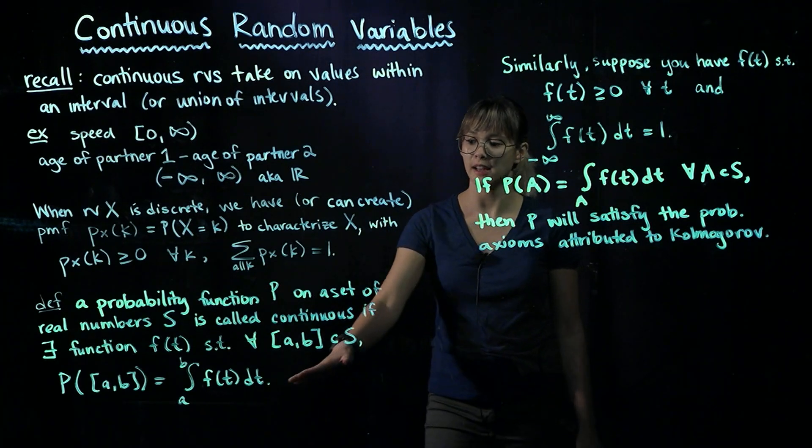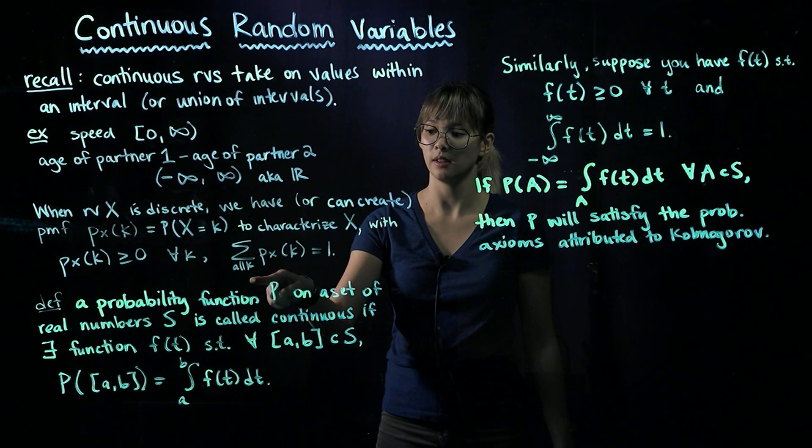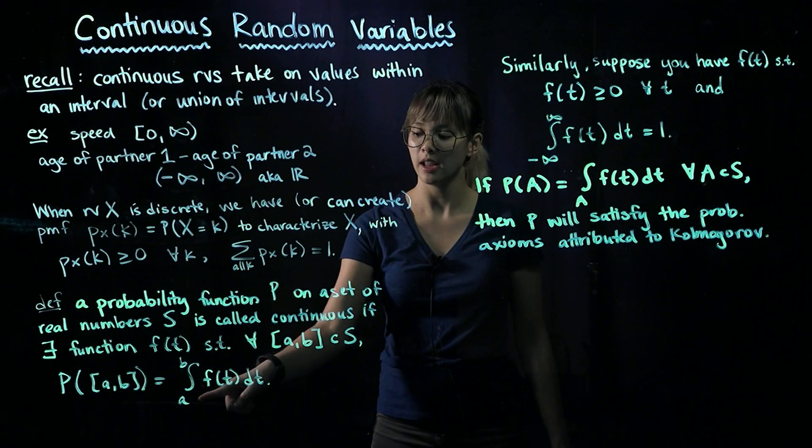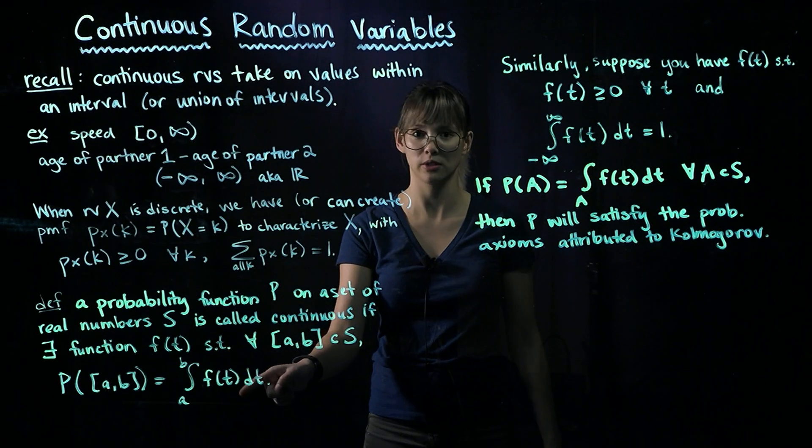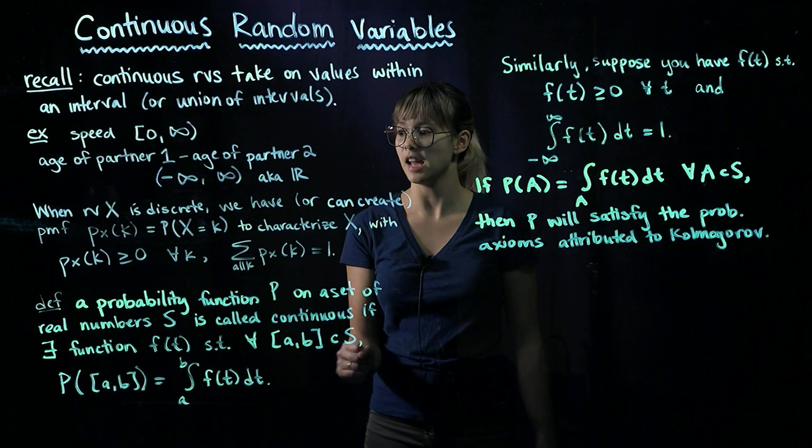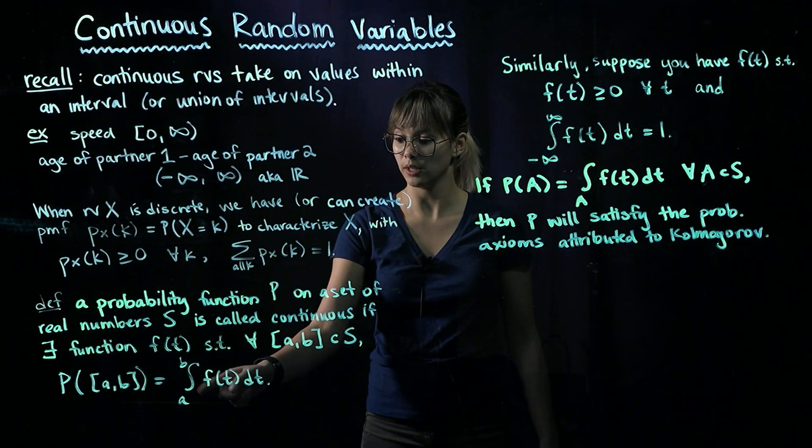So now what we've got is instead of summing up over all values, like we had in the discrete case, we are integrating all the values, integrating over all the values in our continuous case. And if we want to calculate a probability, then we do this integral.